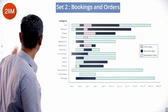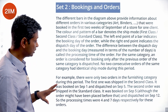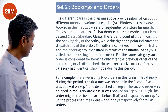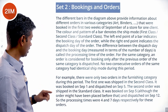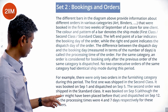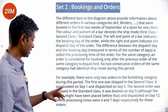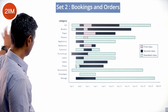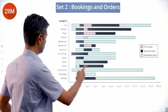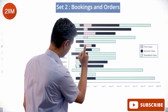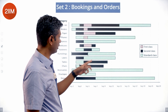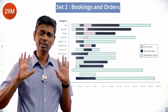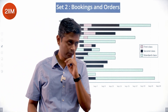For example, there are only two orders in the furnishing category during this period. The first one was second class: booked on September 1 and dispatched on September 5. The second was standard class: booked on September 5 and dispatched on September 12. Processing times are four days and seven days respectively — September 1 to 5, and September 5 to 12.